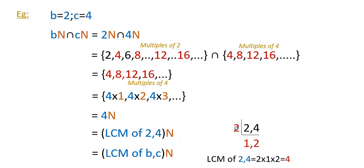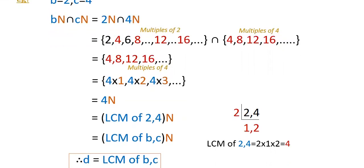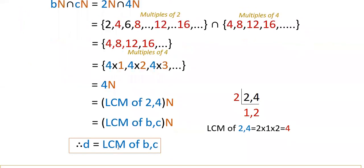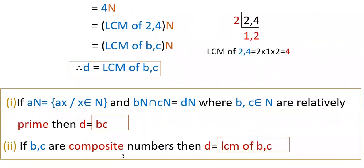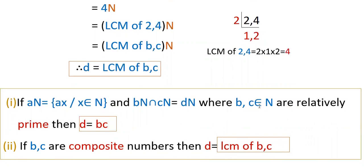You can verify: the LCM of 2 and 4 is 4. So in this case D equals the LCM of B and C. Therefore: in the first case, if B and C are prime numbers, D = BC; and if B and C are composite numbers, D = LCM(B,C). Remember this — if they are prime numbers, D = BC, and if they are composite numbers, D = LCM(B,C).